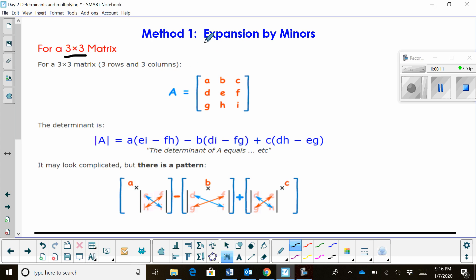The first method we're going to look at is called expansion by minors. So what that means is we're going to expand using the equation with minor matrices. So you need to know how to find the determinant of a 2 by 2 matrix first before you start with a 3 by 3.